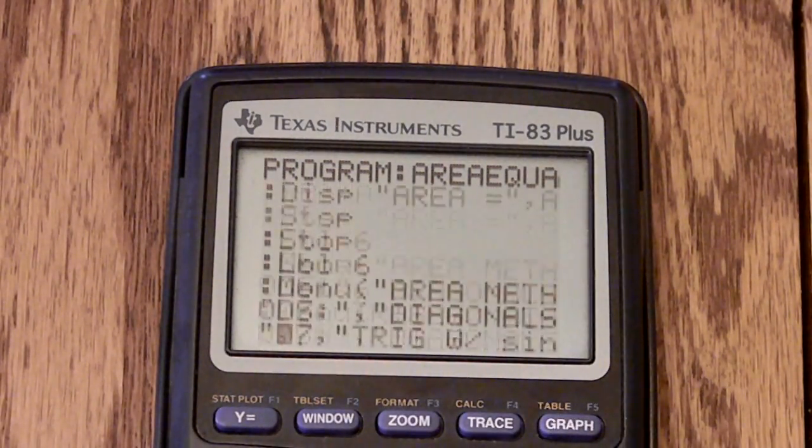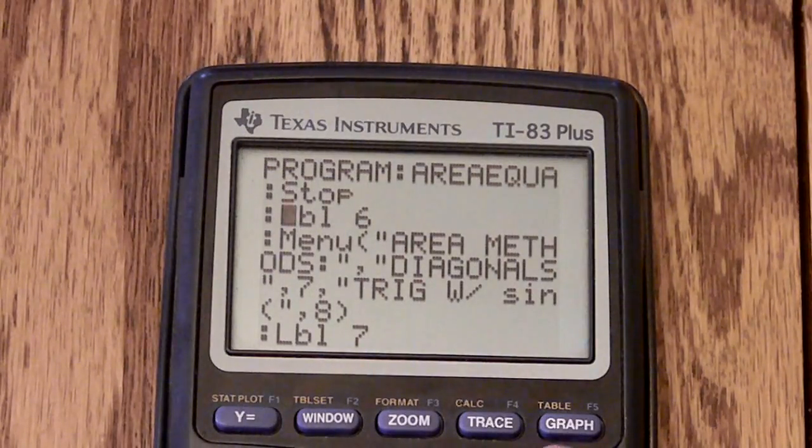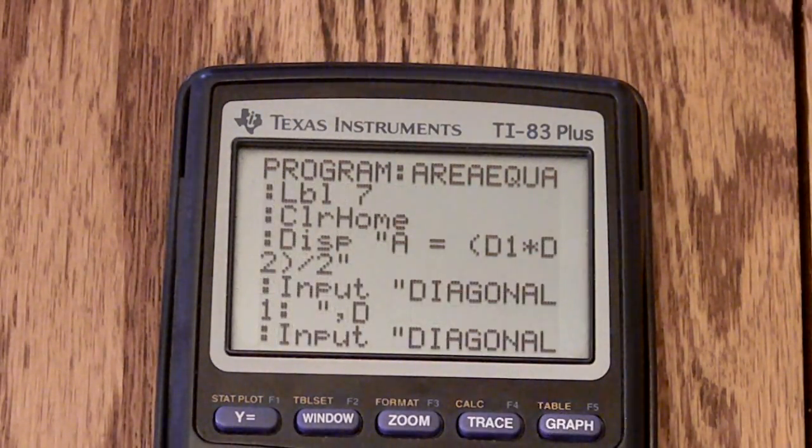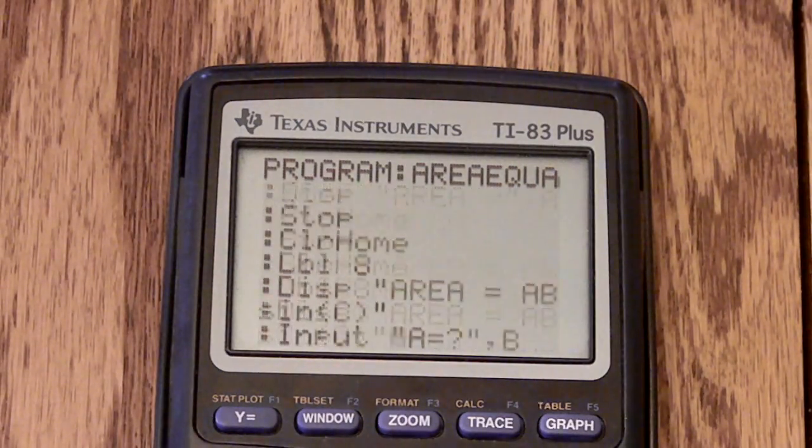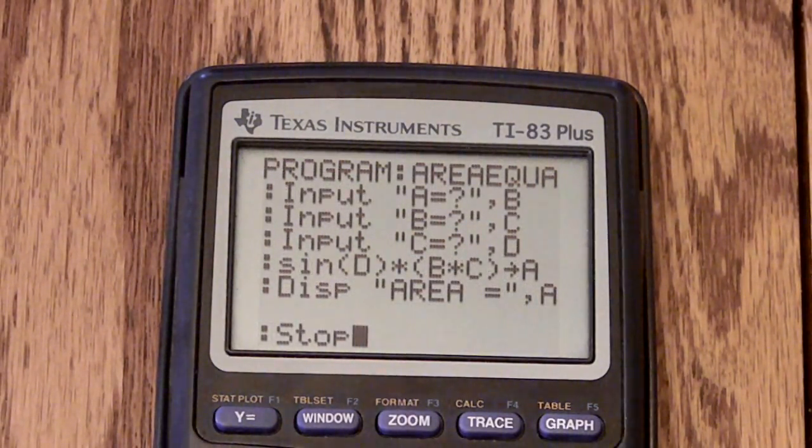This is circle. This is, this one right here is the menu for if you choose you want to find the area of a kite, get the diagonals or the trig. Diagonal method right here, and then the trig method right here. And basically it.